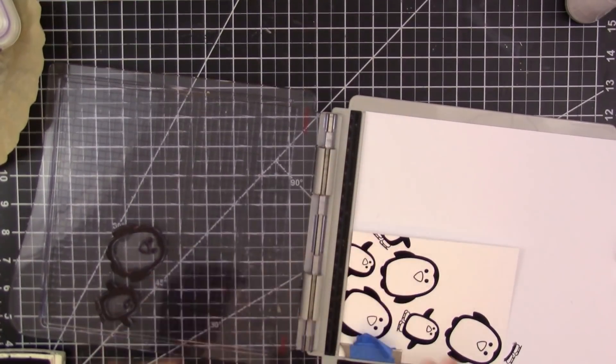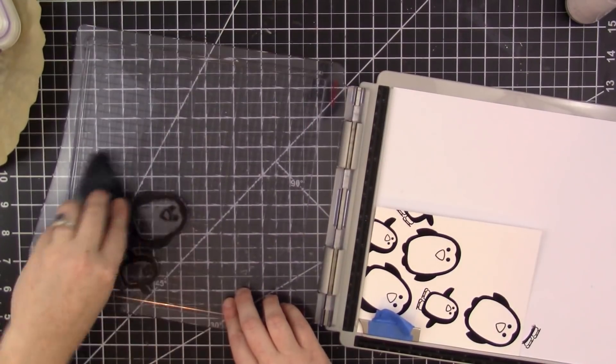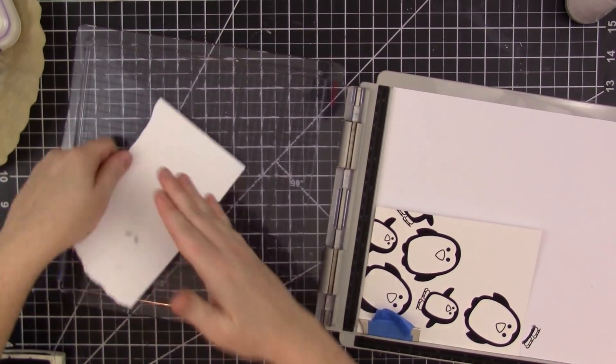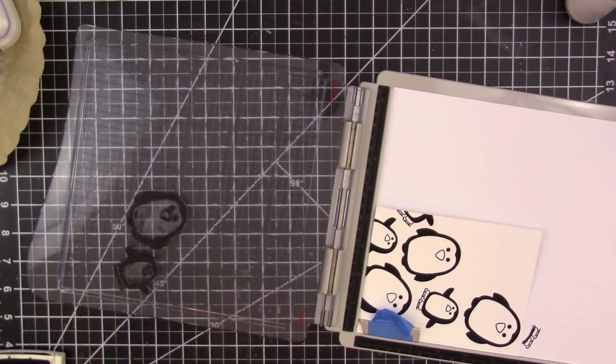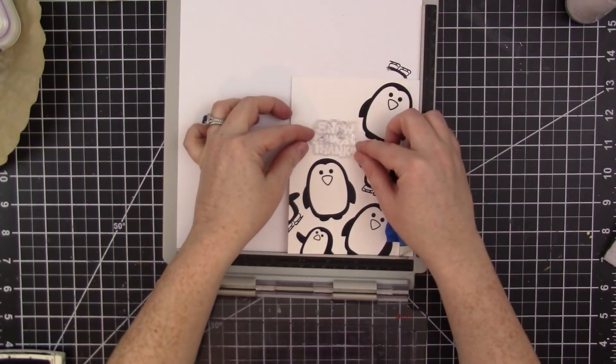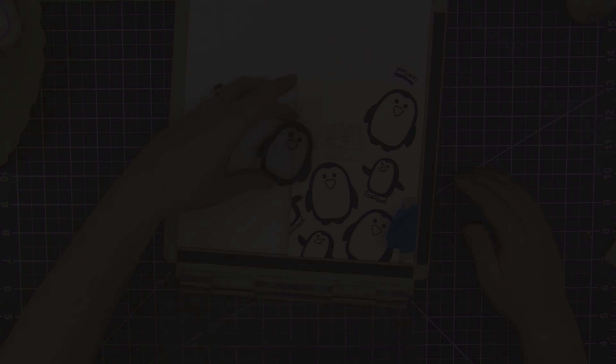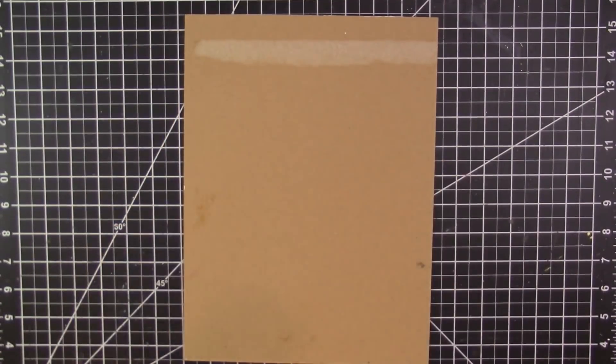And what I'll do is just continue stamping and embossing until I've pretty much filled up the entire card panel, leaving just a small space for where I want the sentiment to go.